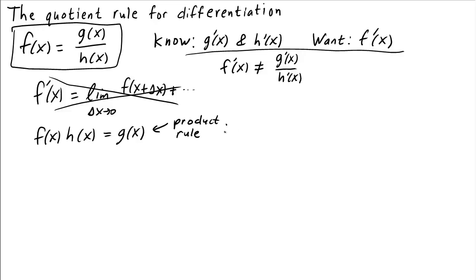The product rule says that f prime of x times h of x plus f of x times h prime of x equals g prime of x. This formula is nice, but it's not exactly what we want.